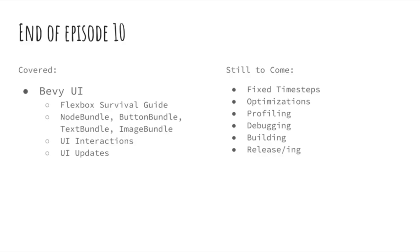That brings us to the end of episode 10. We've covered how to build a user interface using Bevy UI and lay it out with the Flexbox model. You've learned the fundamentals of hierarchical UI using NodeBundle, ButtonBundle, TextBundle, and ImageBundle, and how to interact with and update our UI using Bevy ECS. My plan for the next episodes is to cover optimization, profiling, debugging, and other tools. Thank you all for watching, and see you in the next one.